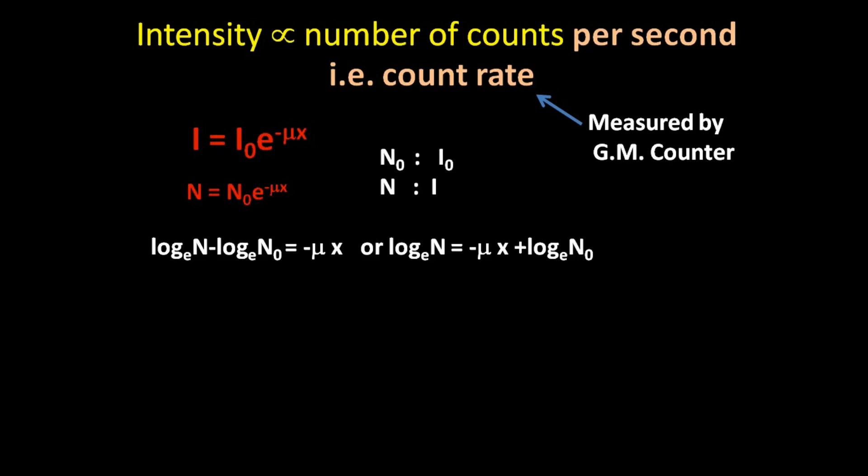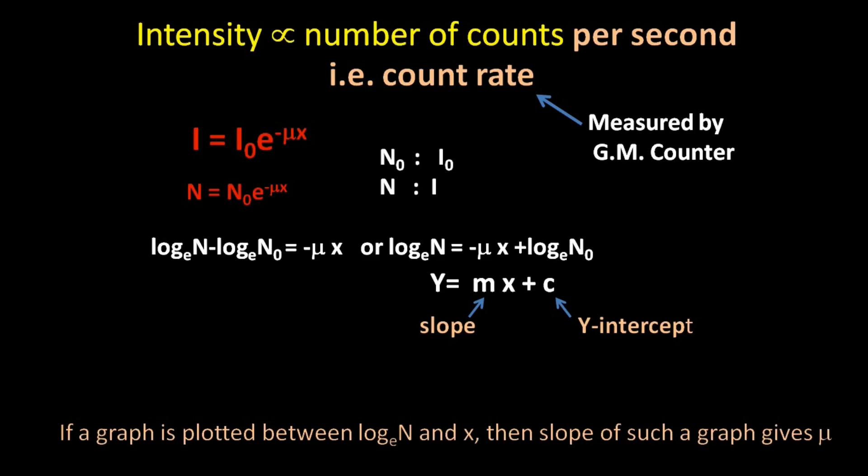This resembles the equation of a straight line where m is the slope and c is the y-intercept. Therefore, if a graph is plotted between log N and the thickness x, it will be a straight line, and the slope of the line gives the value of μ, which is the absorption coefficient of the material, with a negative sign.